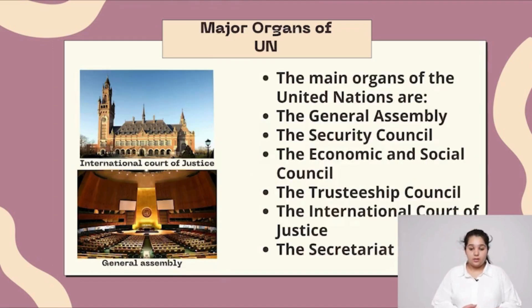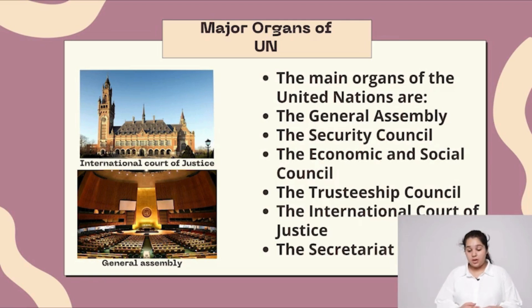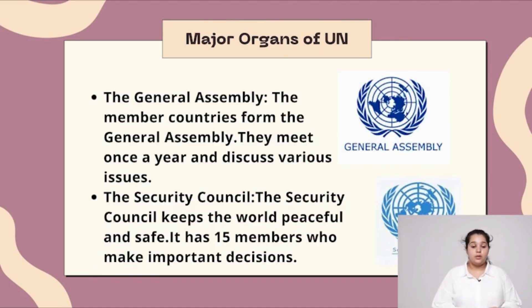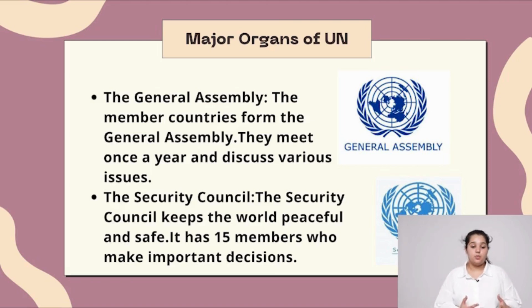Major organs of the UN are: the General Assembly, the Security Council, the Economic and Social Council, the Trusteeship Council, the International Court of Justice, and the Secretariat. The member countries form the General Assembly. They meet once a year and discuss various issues.